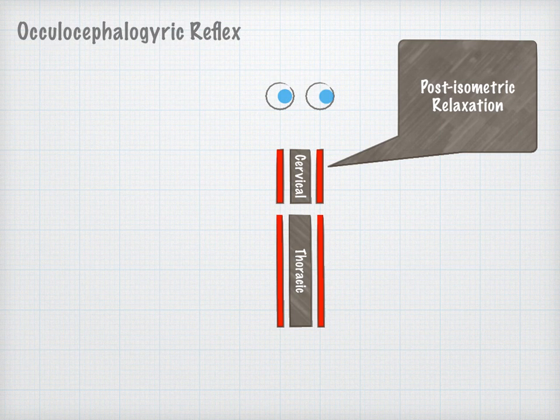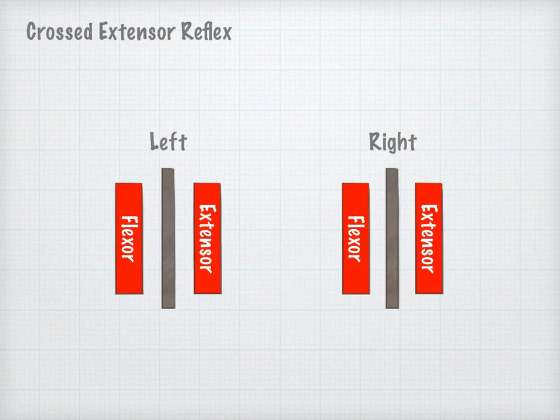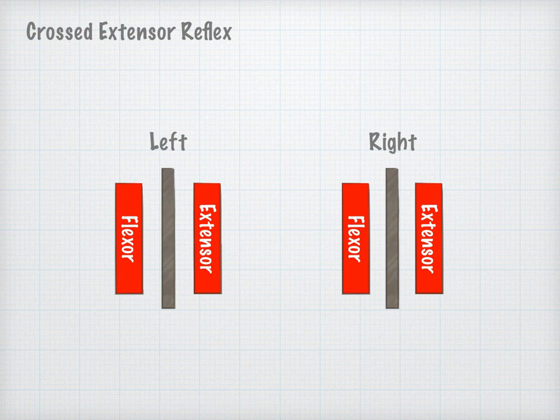The sixth mechanism is the crossed extensor reflex. This technique relies on the learned cross-pattern locomotion reflexes ingrained into the CNS.